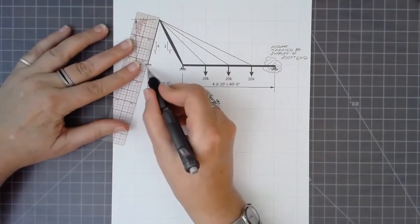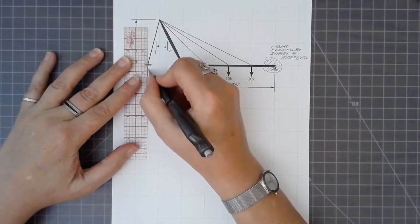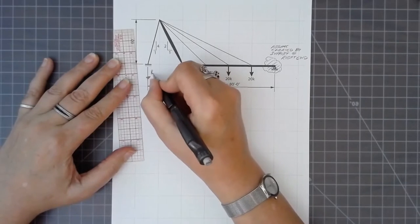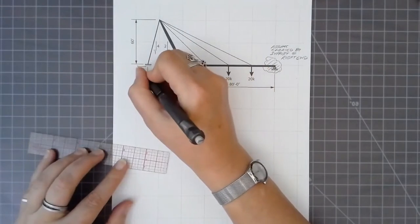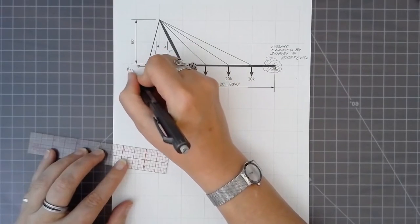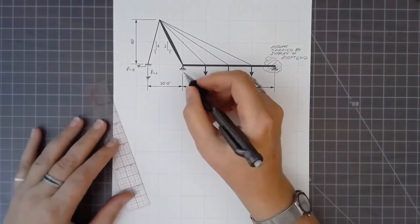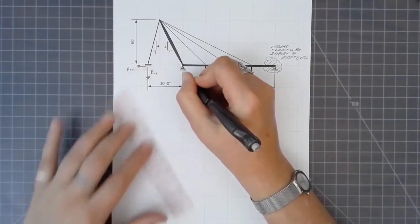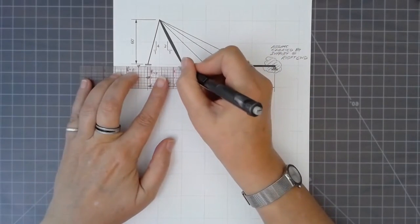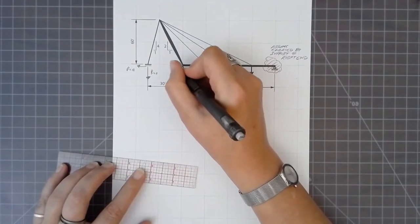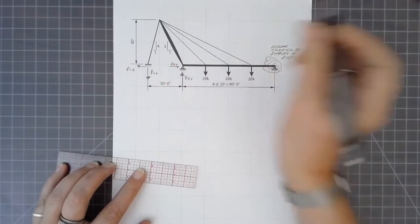Now the backstay can be assumed to have a pin connection, and so the line of action is already known parallel to that line. Because it's sloped, we have both horizontal and vertical reactions, and if we have a vertical reaction at that support, we have to have a vertical reaction at the other support.